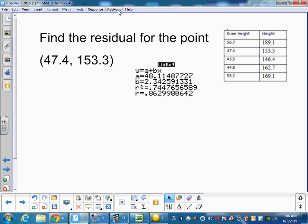Now if we want to find the residual for this point (47.4, 153.3), first thing I do is plug in these values into your calculator and do a linear regression. And now that I have a linear regression, what I could do is just take this and write the linear regression equation, and plug in 47.4 here and get my y hat value and then subtract those values.